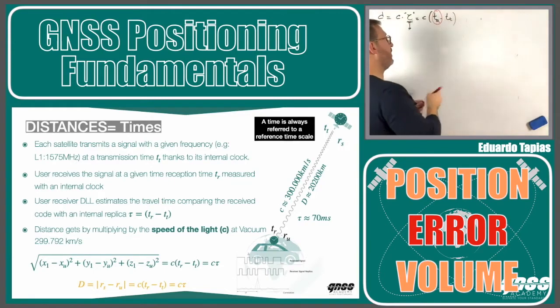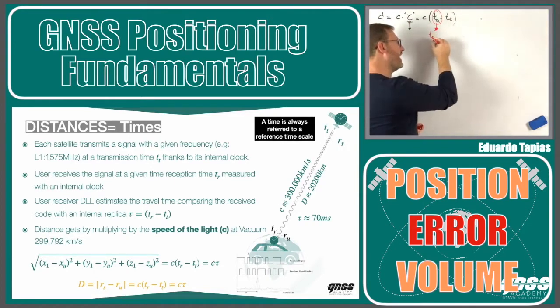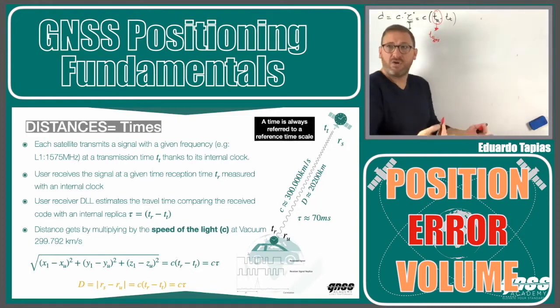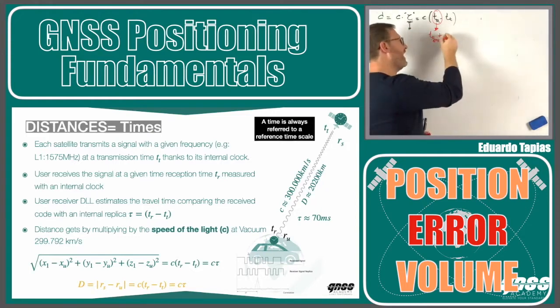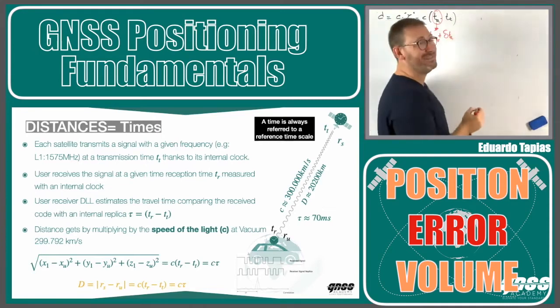This time of reception will be a time of reception in GPS time, or Galileo time, for the one in the constellation, plus a delta time of reception from the internal clock of the receiver.